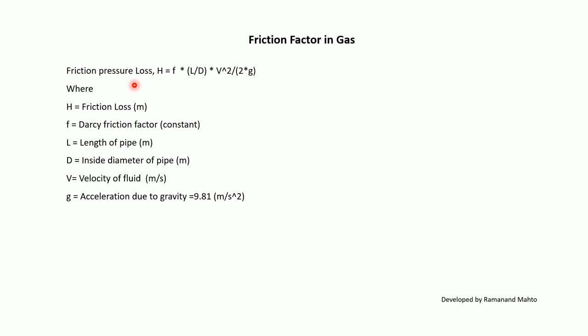Friction pressure loss: H = f × (L/D) × V² / 2g, where H is friction loss in meters, f is the Darcy friction factor, L is the length of pipe in meters, D is the inside diameter of pipe in meters, V is the fluid velocity in meters per second, and g is acceleration due to gravity = 9.81 m/s².